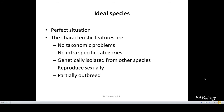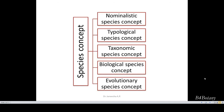Regarding the different species concepts, there are mainly five species concepts: nominalistic, typological, taxonomic, biological, and evolutionary.